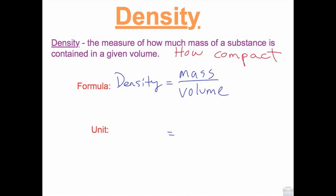The unit is expressed as grams per milliliter. We measure mass in grams and volume in milliliters. We could also measure volume in centimeters cubed, so we have a second unit. Grams per centimeters cubed works as well.